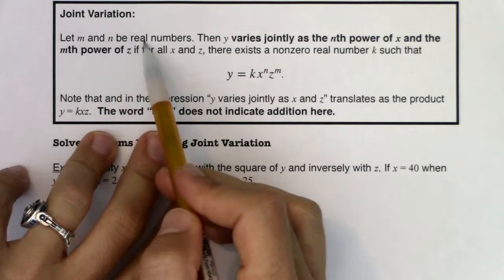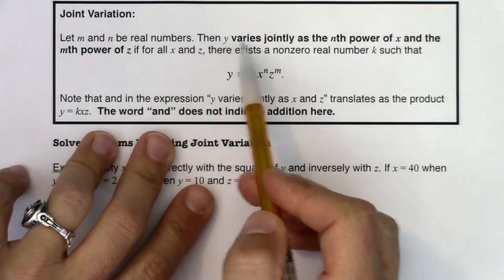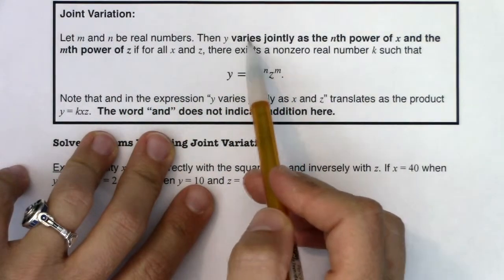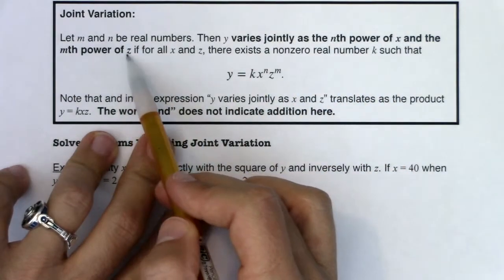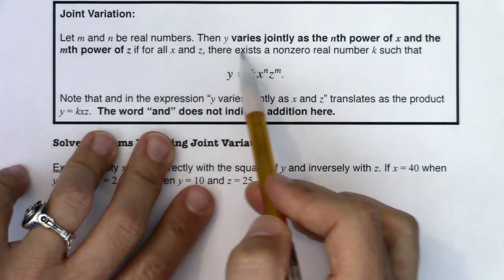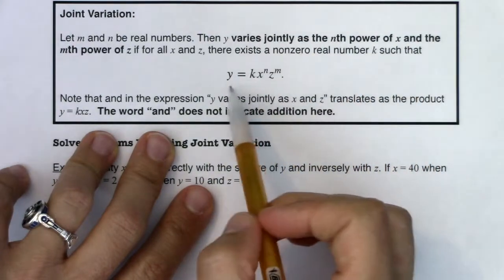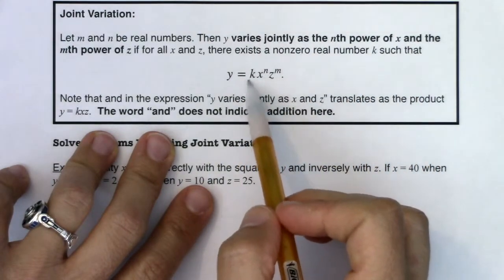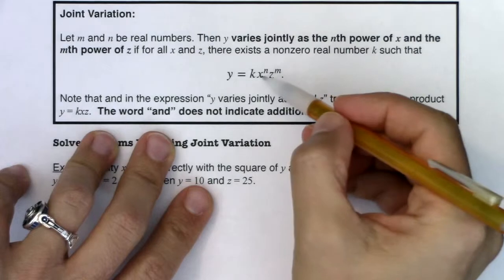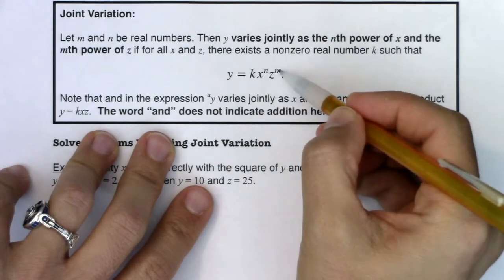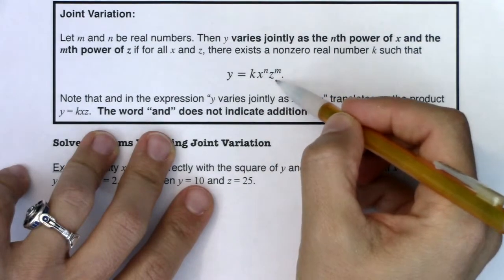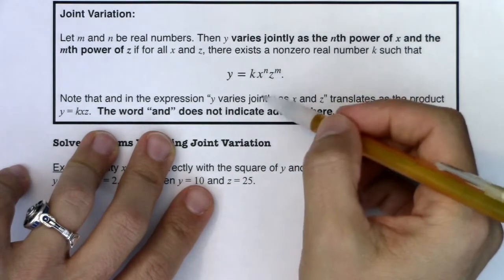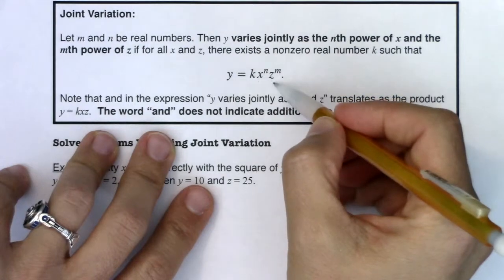So now we're going to let M and N be real numbers, and we will say Y varies jointly as the nth power of X and the mth power of Z. If for all X and Z, there exists a non-zero real number K such that Y is equal to K times X to the N and Z to the M. So you'll see we have three variables this time out, and that's what we refer to when we say we're varying jointly. It's more than one variable.